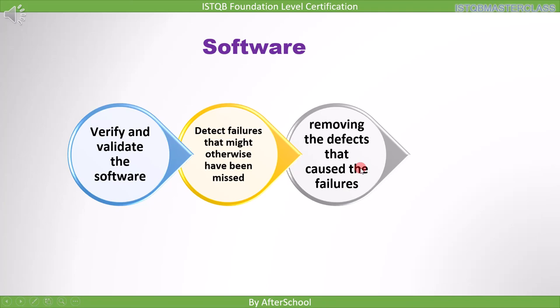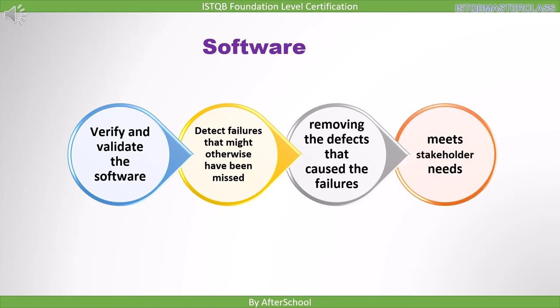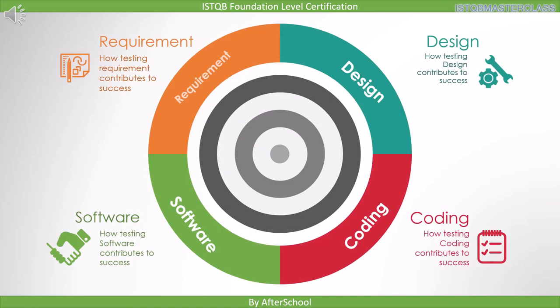This is where the debugging process we discussed comes into play. The tester finds the error and tells the developer, who fixes the problem and sends it back to the tester to confirm that the error is gone. By doing all of this, our software will meet the stakeholders' needs. It will meet the customer's or the user's requirements, and that means everyone using the software will be happy. This is how testing at the software level helps the product succeed — users will have an error-free software because you will have found the problems and fixed them before they used it.